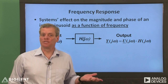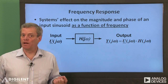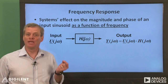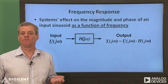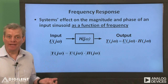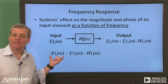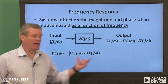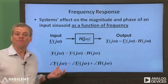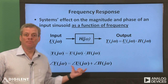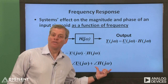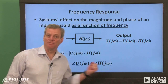The frequency response consists of two parts: a magnitude response, relating the magnitudes of the input and output signals, and a phase response, which relates the phases of the input and output sinusoids. The magnitude of the output signal is simply the magnitude of the input signal times the magnitude response of the system, and the phase of the output signal is simply the phase of the input signal plus the phase angle induced by the system.